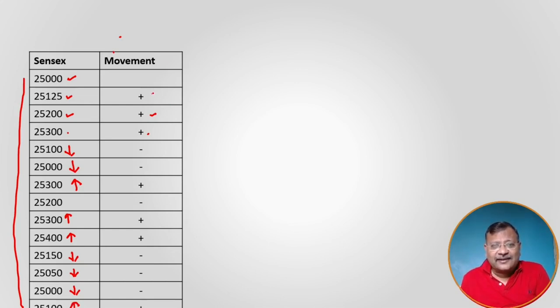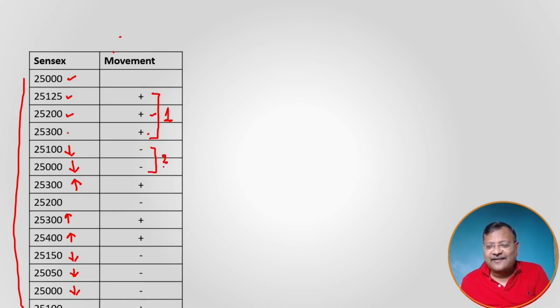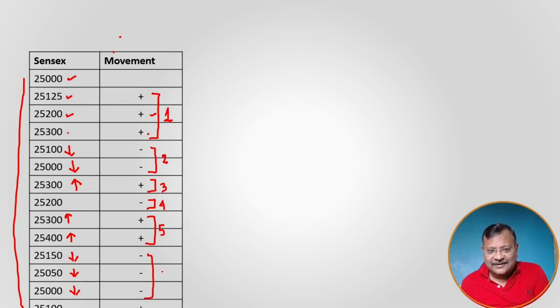Looking at the complete series of moves: plus, plus, plus, minus, minus, plus, minus, plus, plus, minus, minus, minus, plus. Recollecting the definition of run — every time a direction changes, a new run is created. The three consecutive plus movements form run one. The two minus movements form run two. The single plus is run three. The single minus is run four. The two pluses form run five. The three minuses form run six. And the final plus is run seven. Total number of runs: seven.